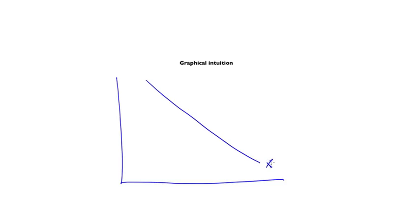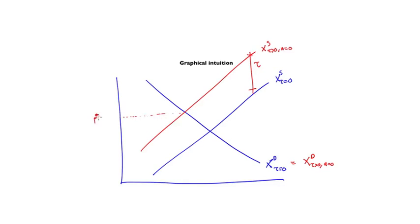The following graph provides a nice graphical intuition. This is the demand when there is no tax and the supply when there is no tax. Now in the case in which all of the tax is paid by the producer, A equals zero, the demand doesn't change but the supply shifts up by tau. This becomes the new equilibrium price, P star of A equals zero.